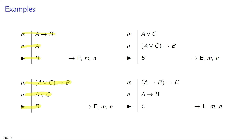The order of the lines M and N doesn't really matter. So suppose that in line M you have the sentence A or C, and then in a later line N of your proof you have a conditional of the form if A or C then B. You can still infer the consequent B even though the order of these two lines is reversed in comparison to what we have seen before.